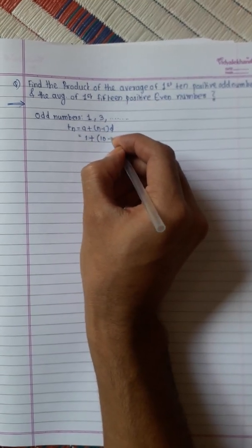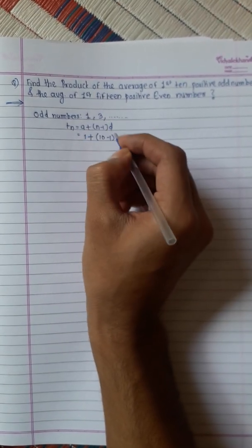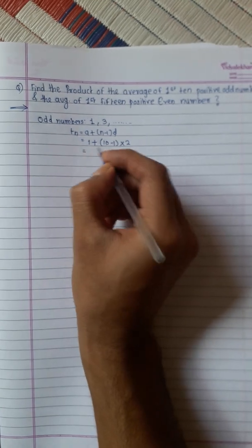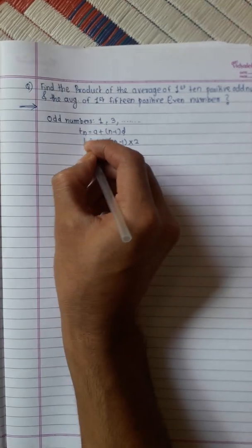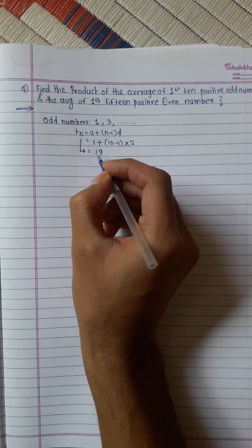Therefore, 10 minus 1 and the difference is 2. Therefore, 10 minus 1 is 9 into 2 is 18 plus 1 is 19. Therefore, the tenth odd number is 19.